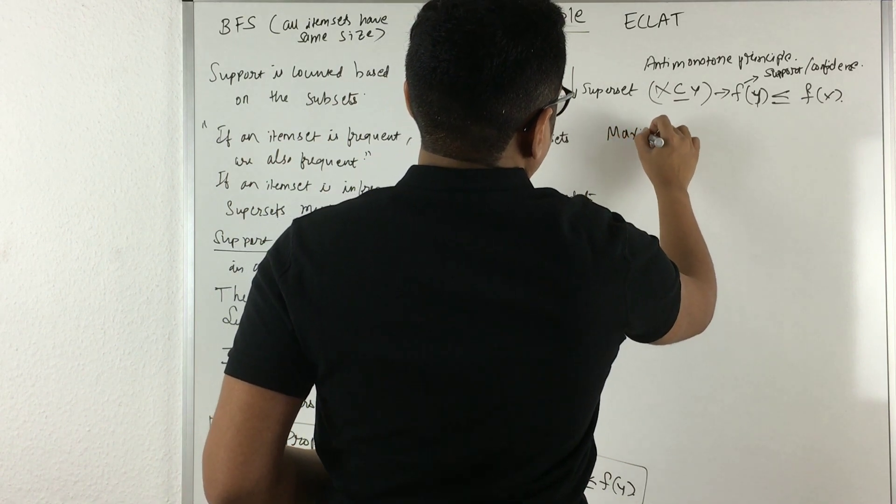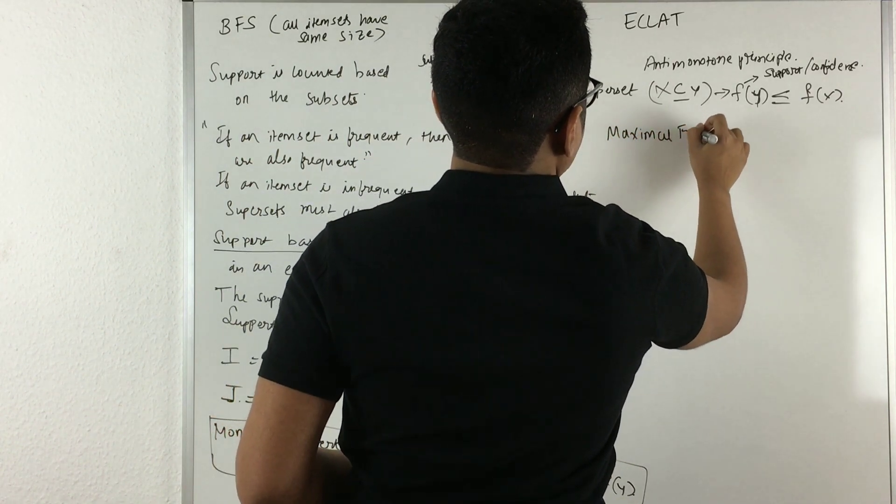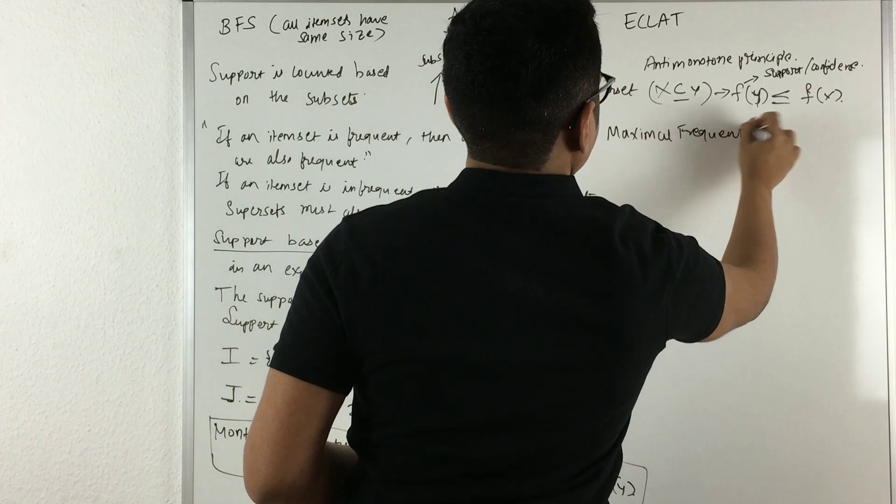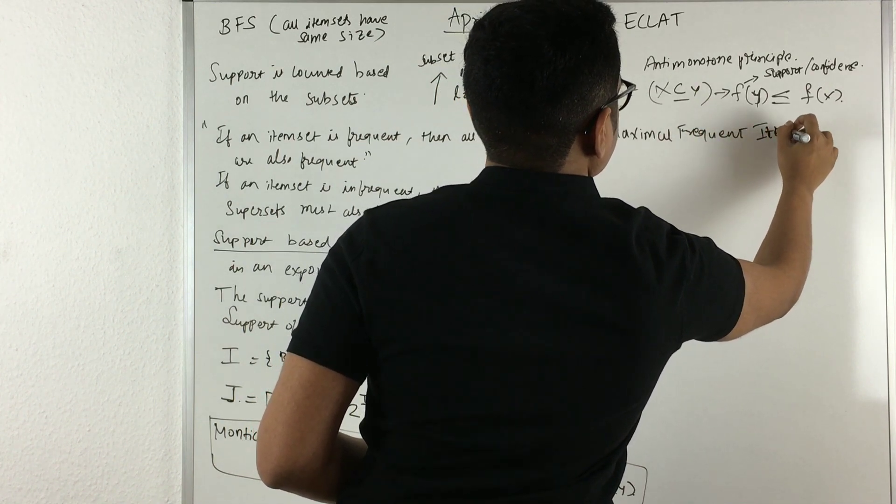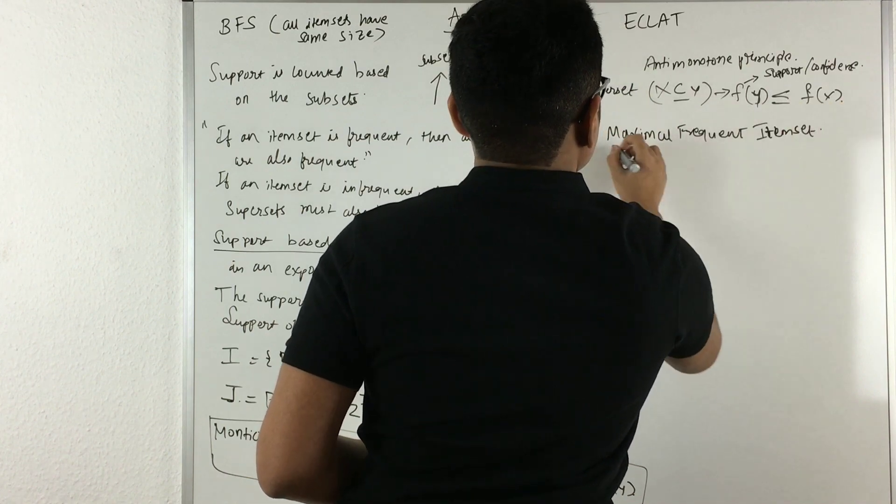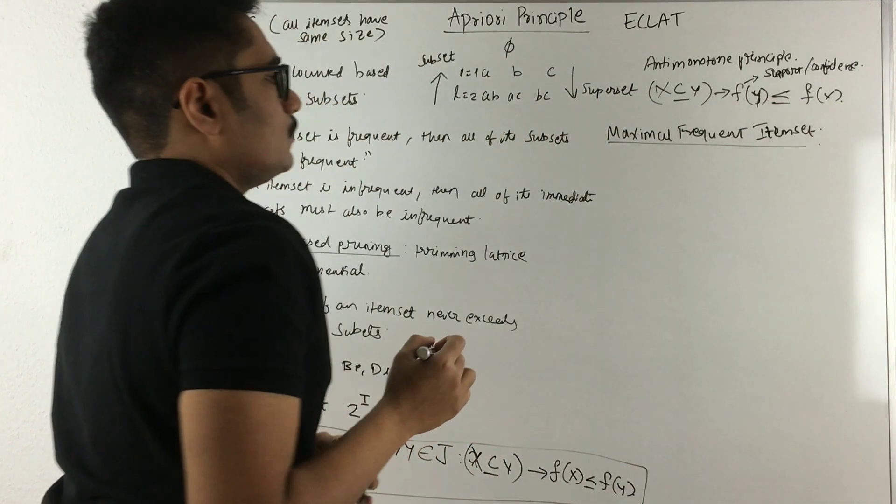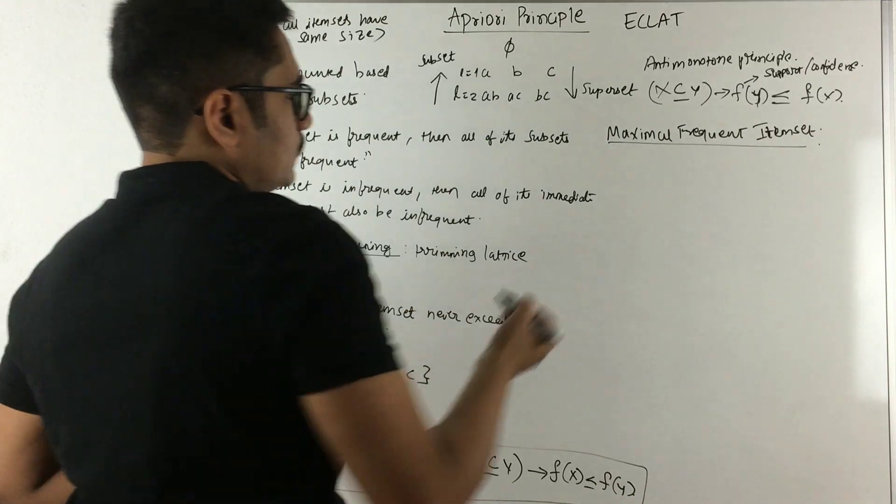Now what we have is something called maximal frequent item set. So what maximal frequent item set is: